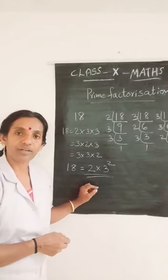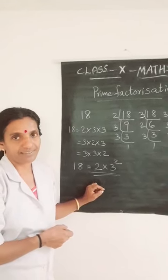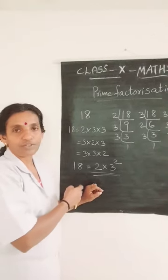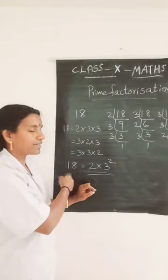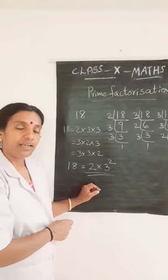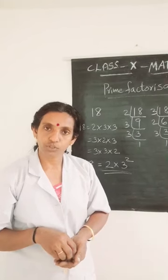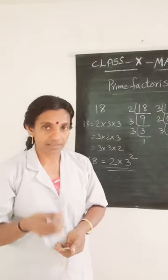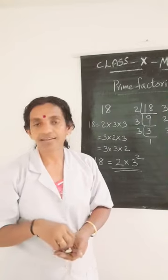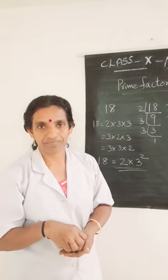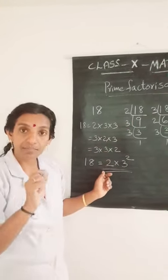Now you have studied one important theorem — our first theorem: the Fundamental Theorem of Arithmetic. The prime factorization of any composite number you can do in any order, but the answer is same. That is, every composite number can be expressed or factorized as the product of prime factors, and this factorization is unique, apart from the order in which the prime factors occur.